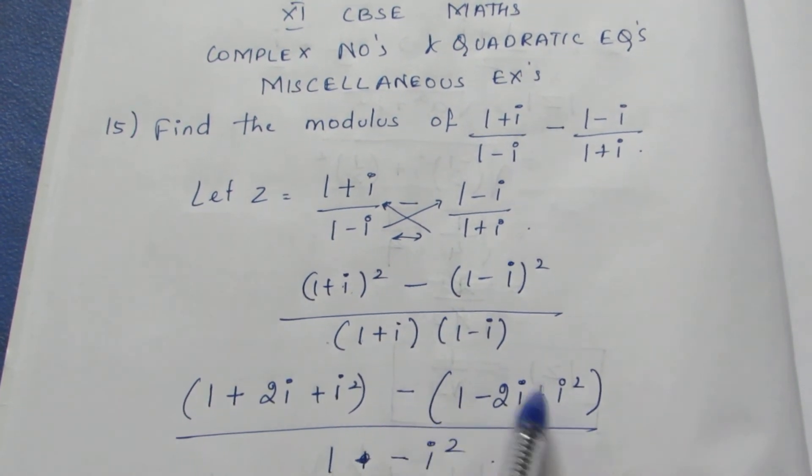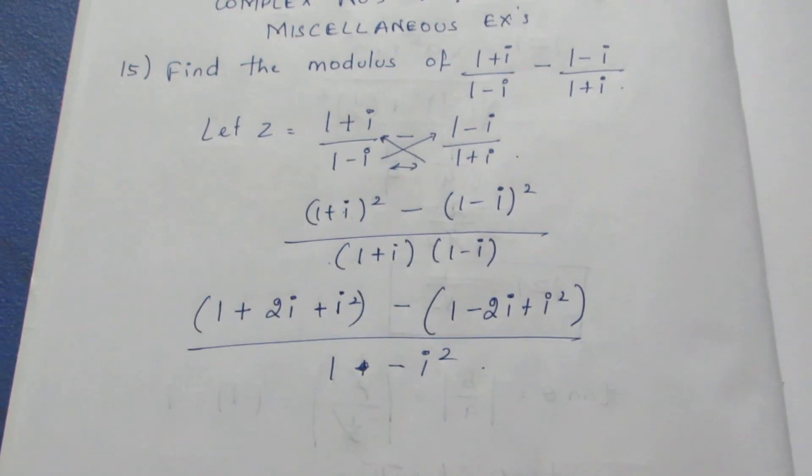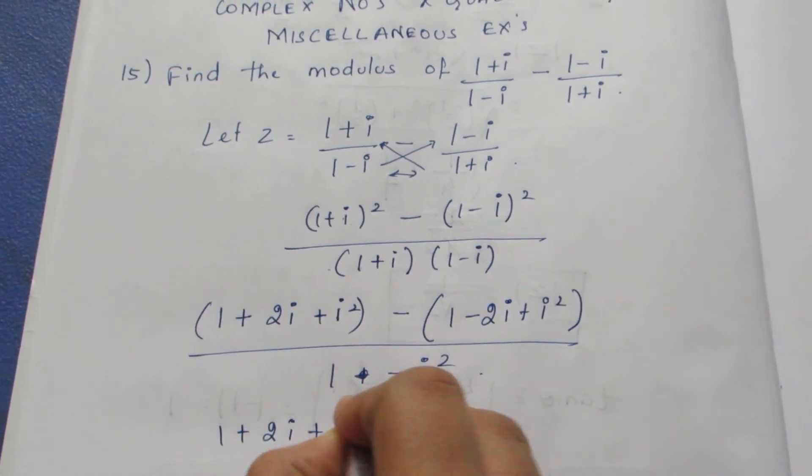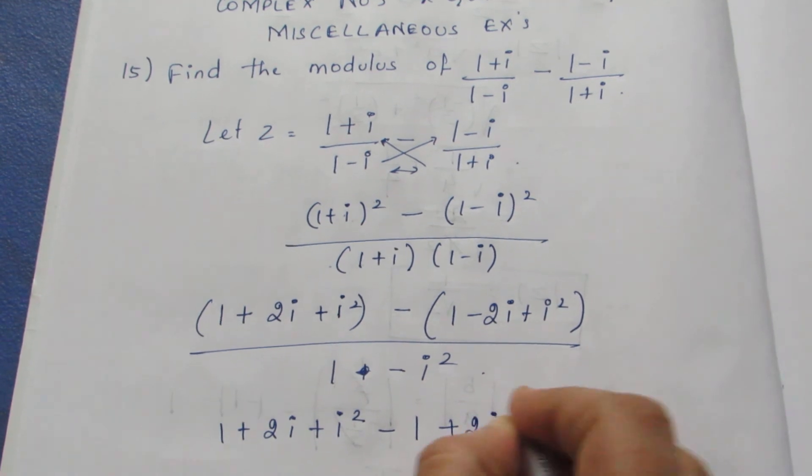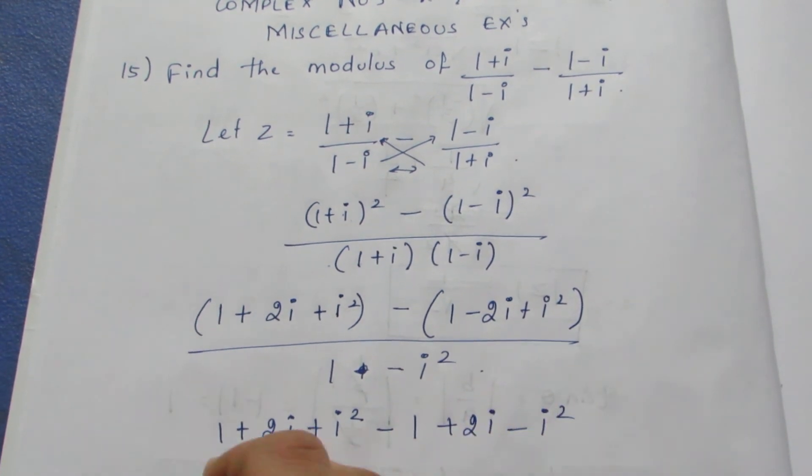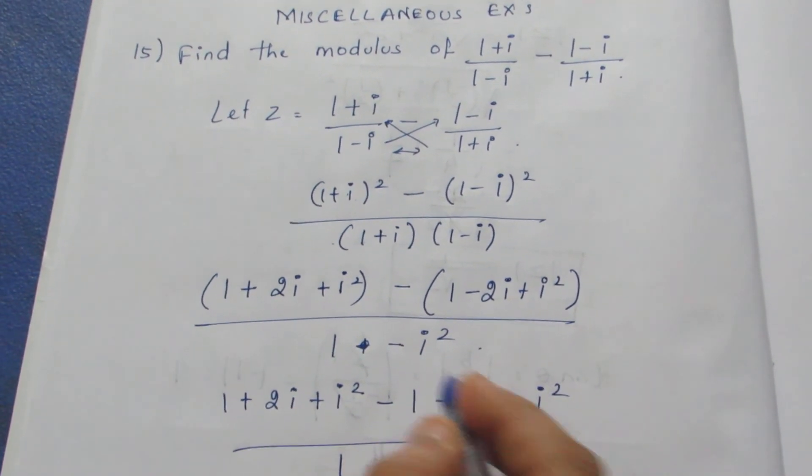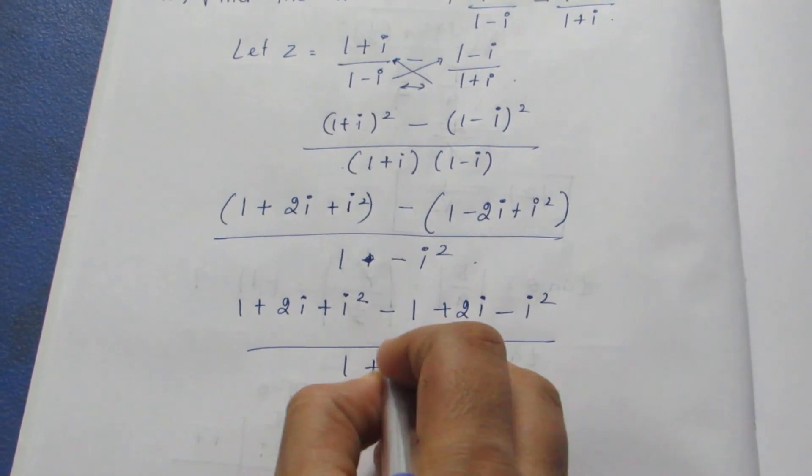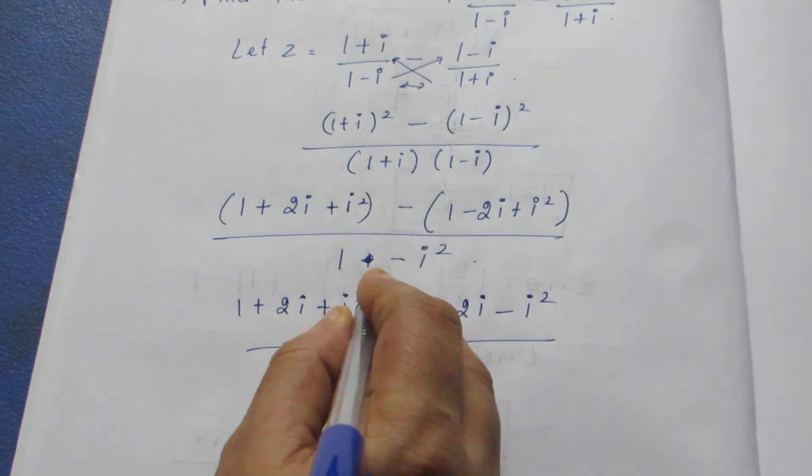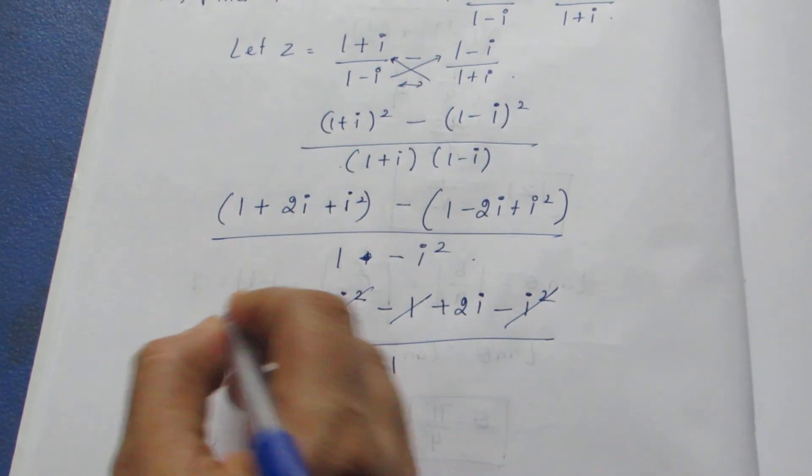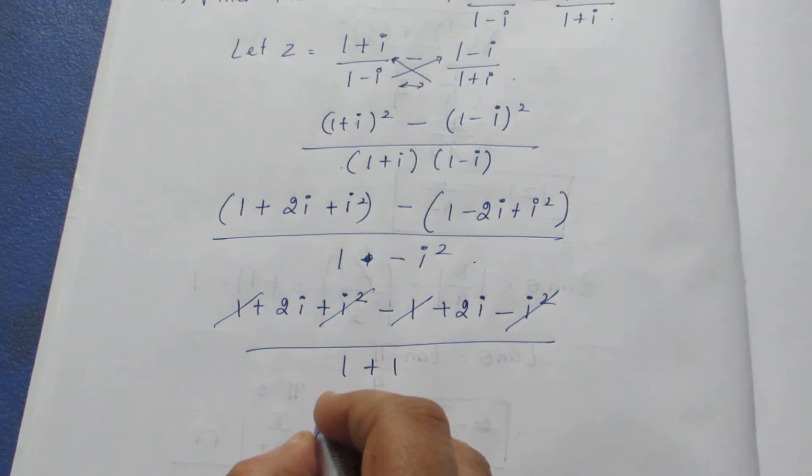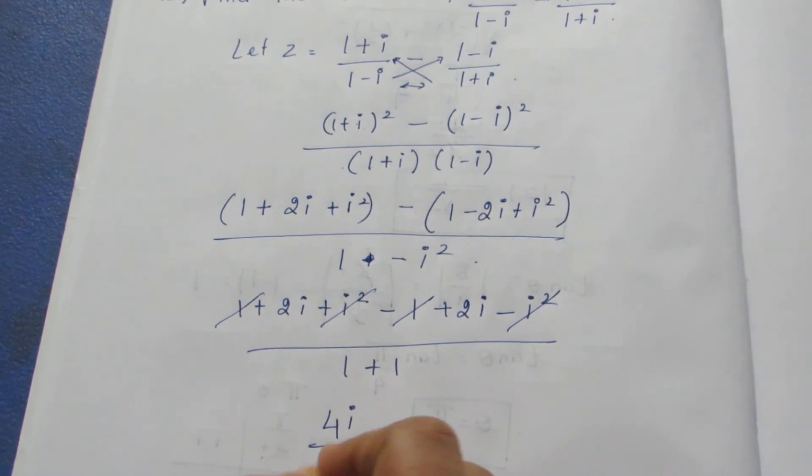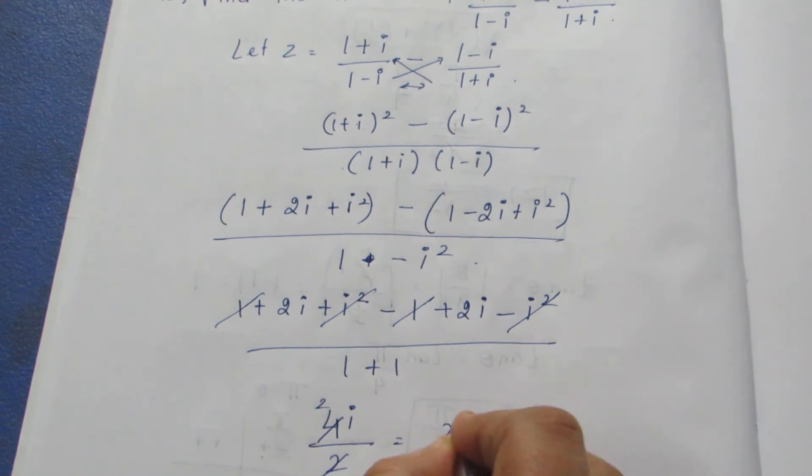Now taking the minus sign inside, I get (1 + 2i + i²) minus (1 - 2i + i²), divided by (1 - i²). We know i² is minus 1, so it becomes plus 1. Minus i² and plus i² get cancelled, minus 1 and plus 1 get cancelled, and in the numerator it becomes 4i by 2. If I cancel this, I get 2i.